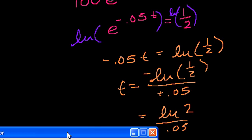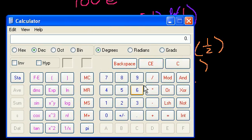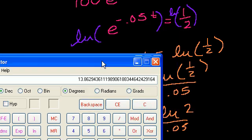So 2 over 0.05. Makes the calculator math a little bit easier. So if I do 2 natural log divided by 0.05, it is equal to 13.86.